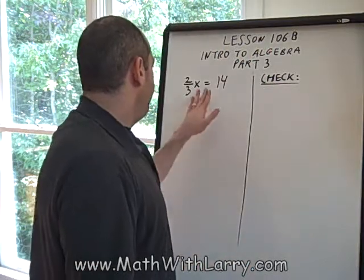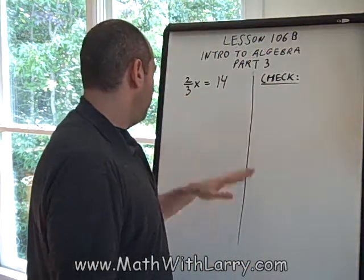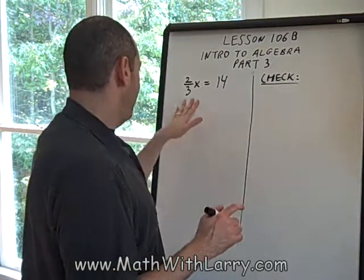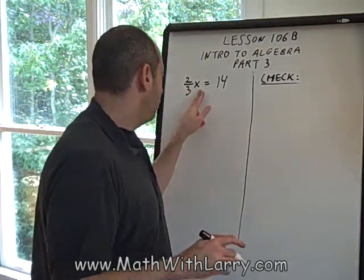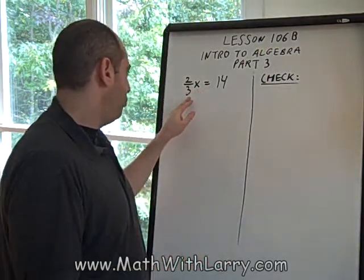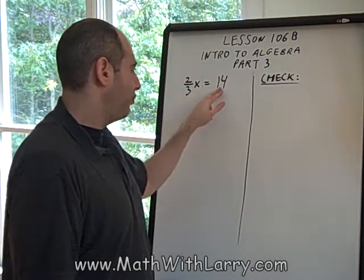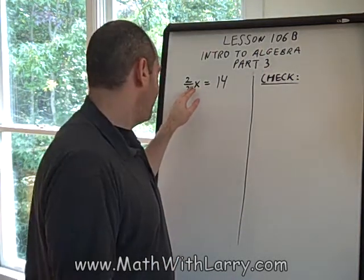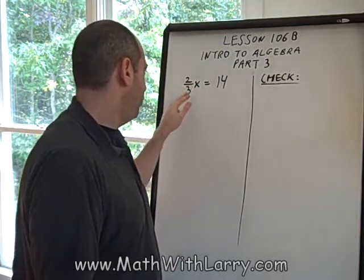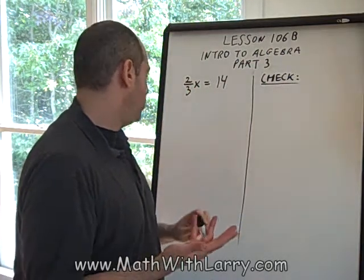Okay, for this lesson I'm going to look at a problem that's a little bit different than what we've looked at up until now. It can be a little intimidating. Let's just take a look at what we have here. We have 2/3 times x equals 14. Recall that since I have no symbol between the 2/3 and the x, it means that we're multiplying.